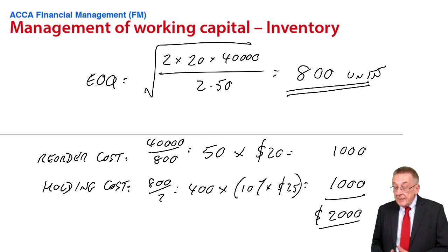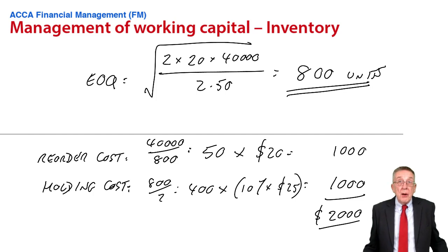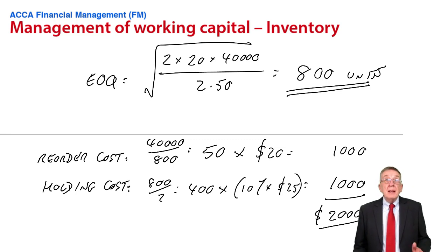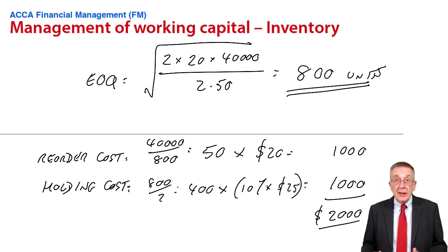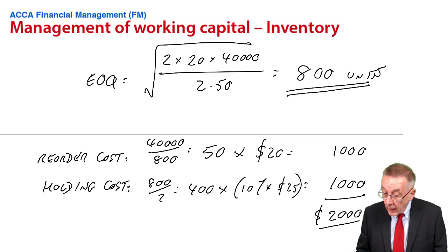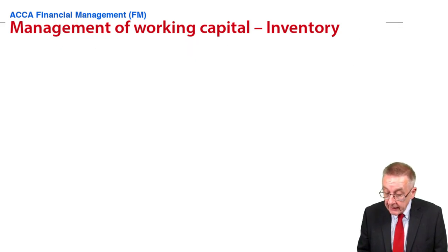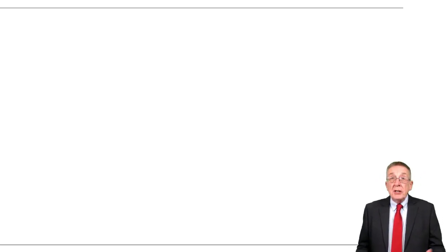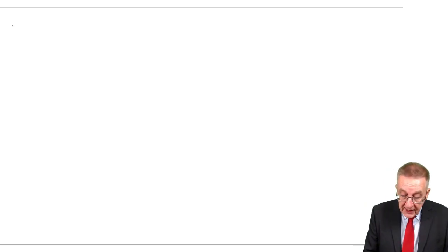Now we already know that 800 units will give the minimum inventory costs. If we order bigger quantities each time, the inventory costs over the year are bound to be higher. Think back to the graph. But it could be worth paying higher inventory costs if, because of the discount, the cost of buying the 40,000 units over the year was lower. And so there's no quick way here. There's no more formulae. We've just got to cost out. And what are the choices? We know the economic order quantity was 800.